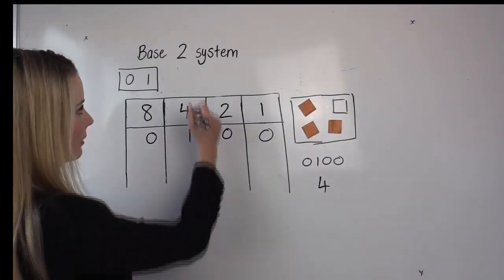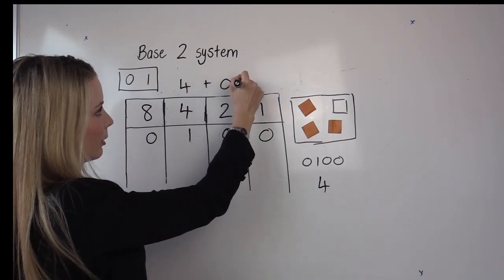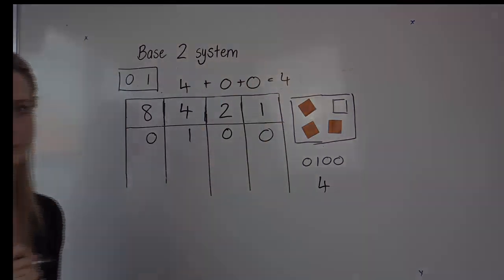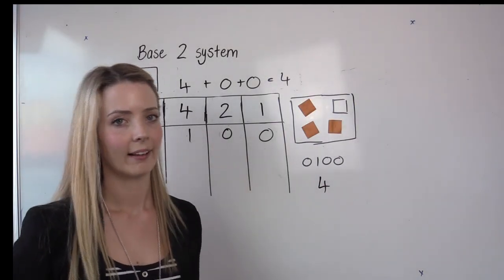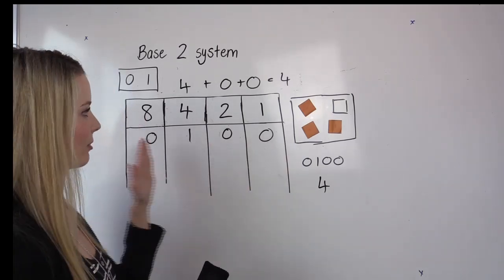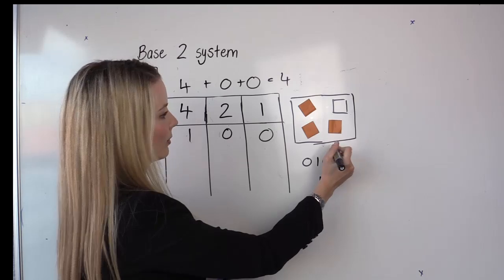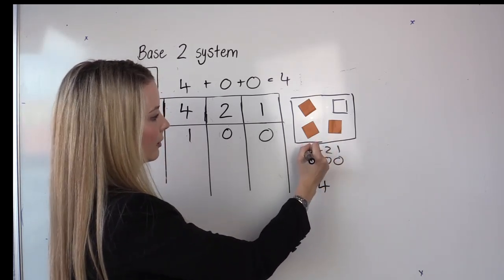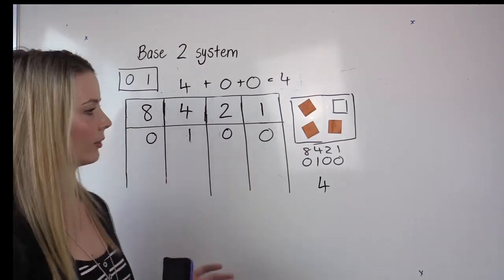So we can indicate this by going four plus zero plus zero equals four. Base 10 system we learn our numbers off by heart and also with binary you can learn these sequences off by heart. So you can learn and remember that this is a one this is a two and each time it's growing times two so I'm just doubling it.